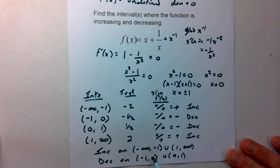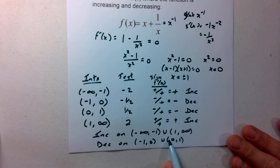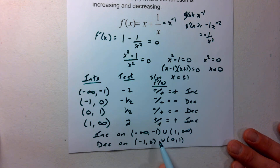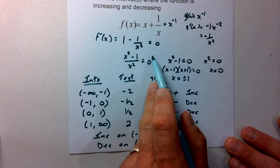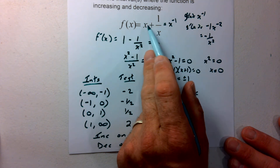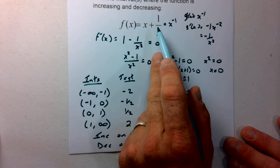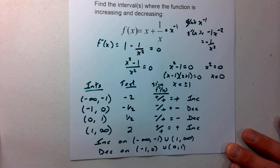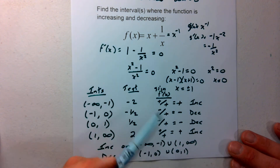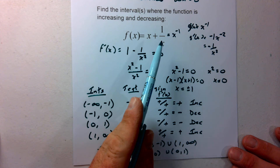Notice I did not combine the decreasing intervals into negative 1 to 1, because we're not decreasing all the way from negative 1 to 1. Something is happening at 0 — if we go back to the original function and plug 0 in for x, we get 0 plus 1 over 0, so we have an asymptote occurring there. That's why we keep the intervals separate; we'll talk more about asymptotes when we get into graphing.